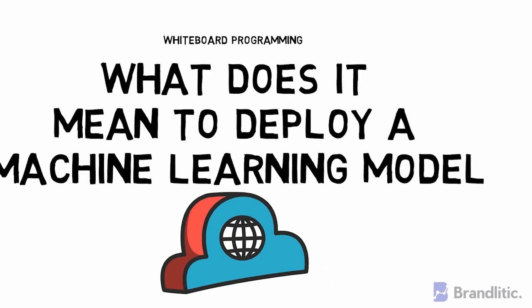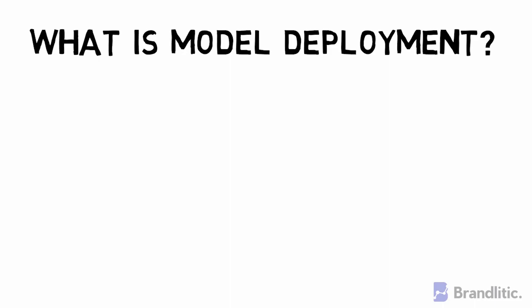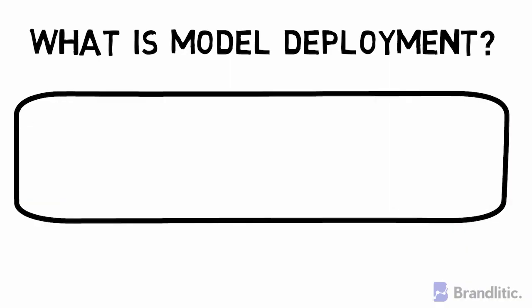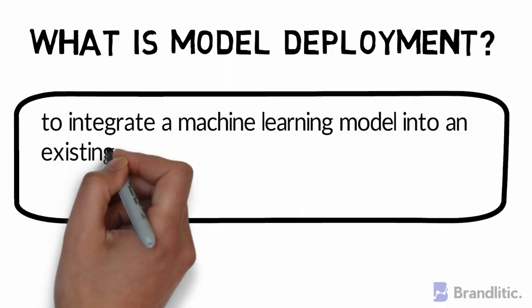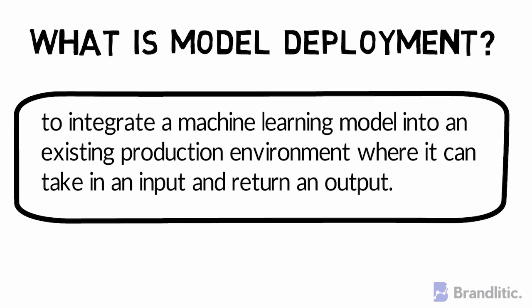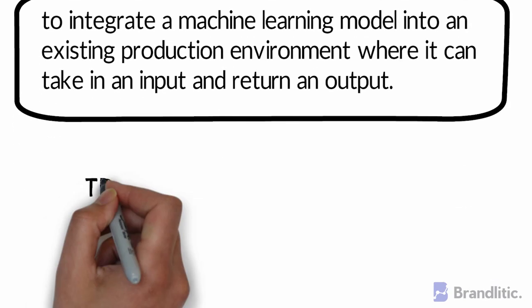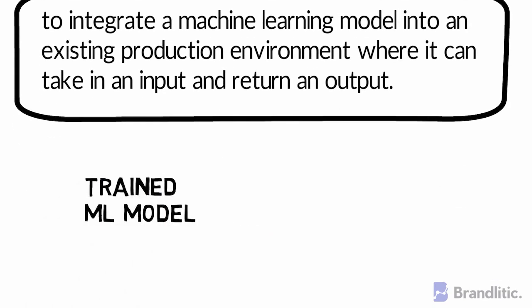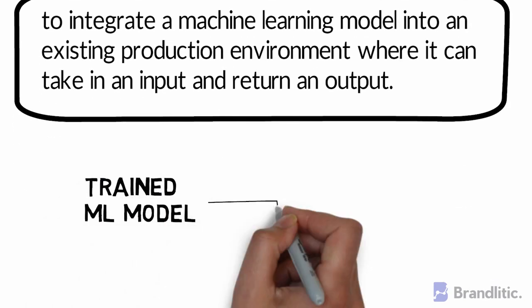First off, what is model deployment? In practice, deploying a machine learning model — the process known as model deployment — simply means to integrate a machine learning model into an existing production environment, where it can take in an input and return an output. The purpose of deploying your model is to make the predictions from a trained ML model available to others and systems existing in the network.